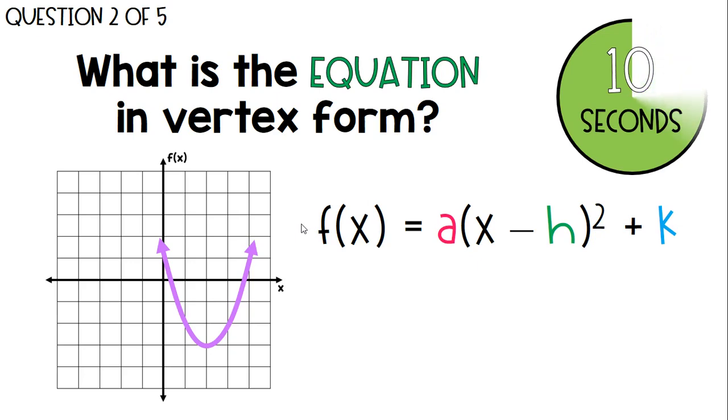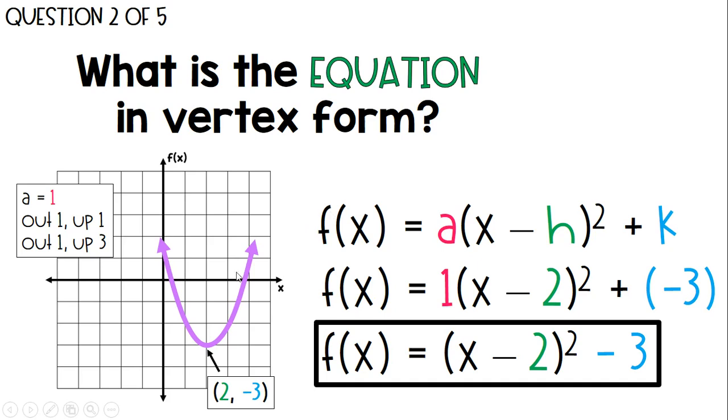Next one. Determine the vertex, that's your h and k, and then determine your a value. Let's take a look. My vertex is 2, negative 3, so it becomes x minus 2, and then the k value is negative 3, so it's minus 3 at the end. I also know my a value is still positive 1 because from the vertex, I'm going out 1, up 1, out 1, up 3, which is exactly like my parent function, which had an a value of 1.